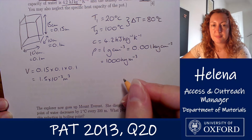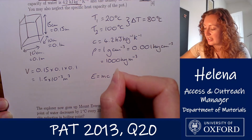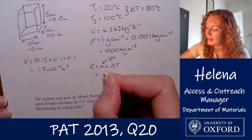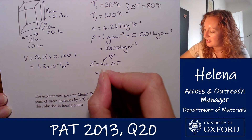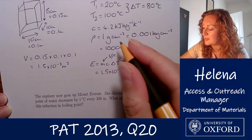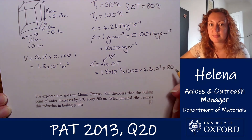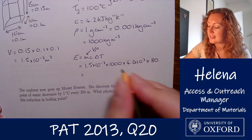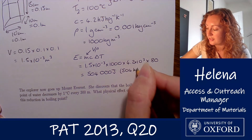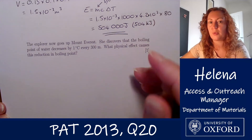That is the volume of our water, so now we can calculate the energy required to heat it using E = mcΔT, remembering that mass equals volume times density. Putting in the values: volume is 1.5 × 10⁻³ times 1000 (density), times the specific heat capacity 4.2 × 10³, times the delta T of 80. Putting that into our calculators gives a value of 504,000 joules, or 504 kilojoules. That's the answer to the first part of the question.